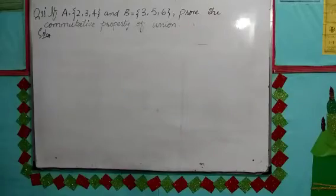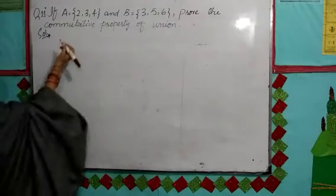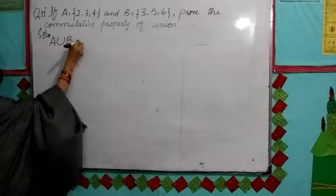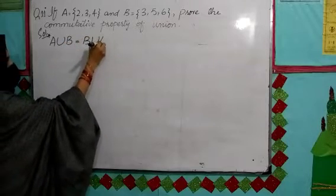Students, what is the commutative property of union? The property of union is A union B is equals to B union A.